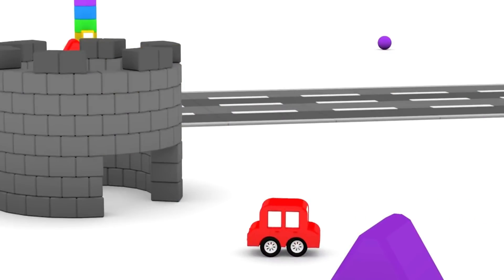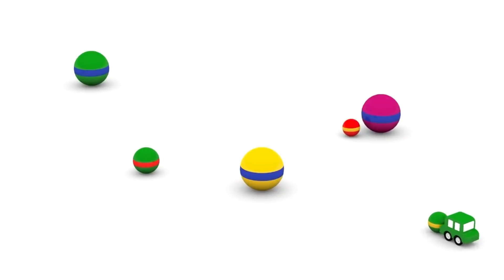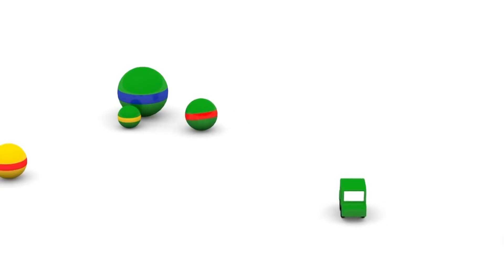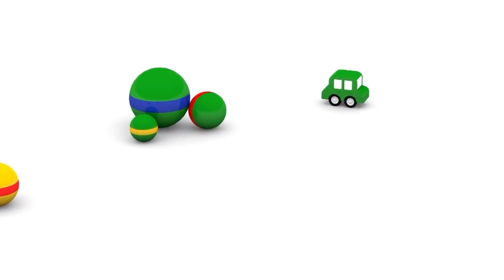The red car wants to hide in this castle made from blocks. While the green car finds a good hiding place behind all these balls.